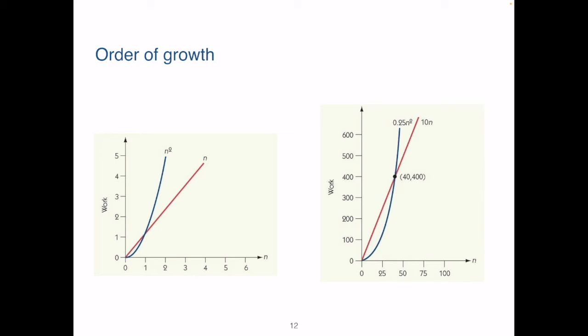Here we use two graphs to show the comparison on the order of growth. N square grows much faster than n, even when n square takes a really small coefficient but n takes a much larger coefficient. Initially, say here, 0.25 n square is less than 10 times n, but after the cross point, when n becomes greater than 40, 10n never has the chance to catch up and their difference becomes increasingly large.